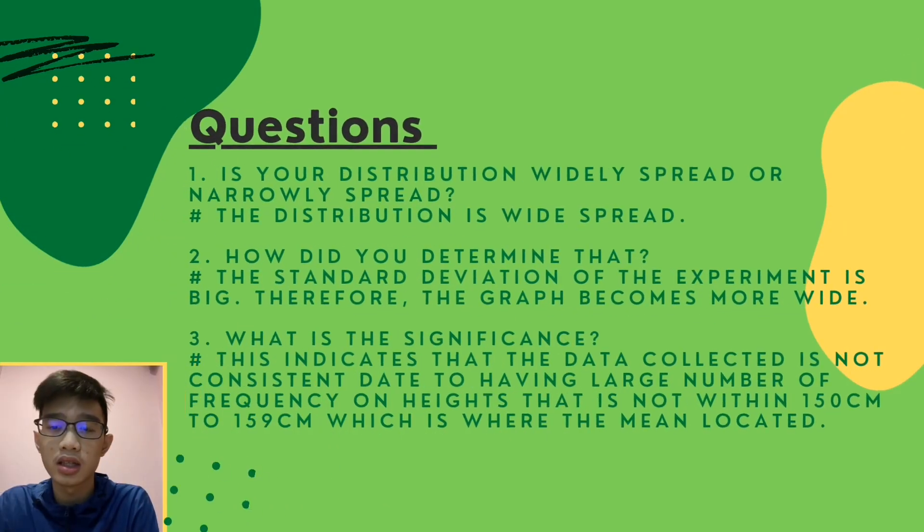Conclusion: The distribution is quite broad. The standard deviation of the experiment is big, therefore the graph becomes wider. This indicates that the data collected is not consistent, with a large number of frequencies on heights not within 150 to 159 cm, which is where the mean is located.